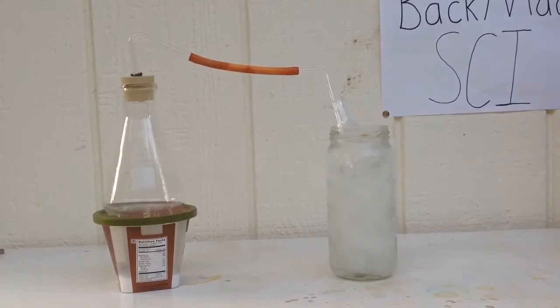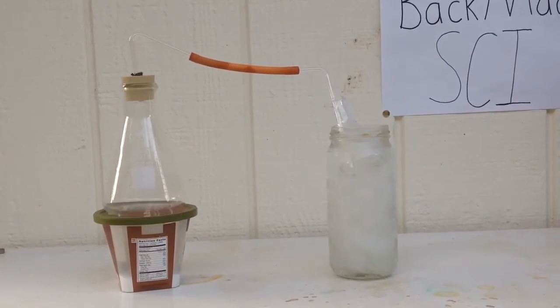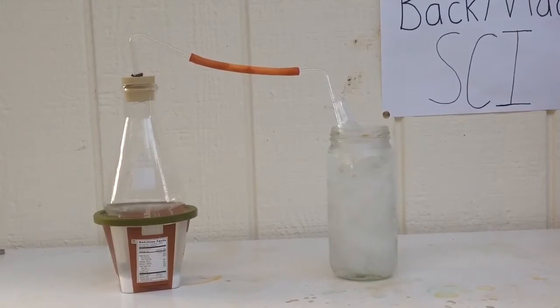The stopper, glass, rubber, glass setup that I showed you earlier should be connected to the flask and the glass 90 degree tube should be going into the mini flask.